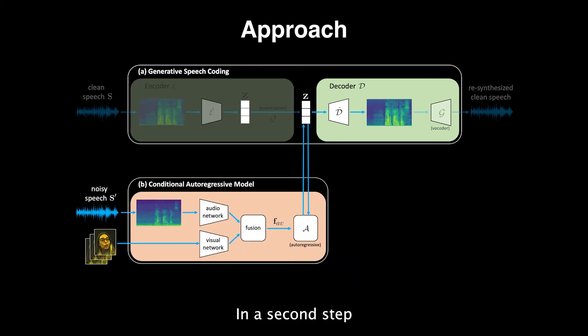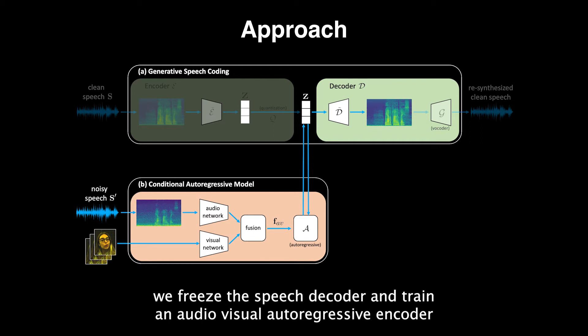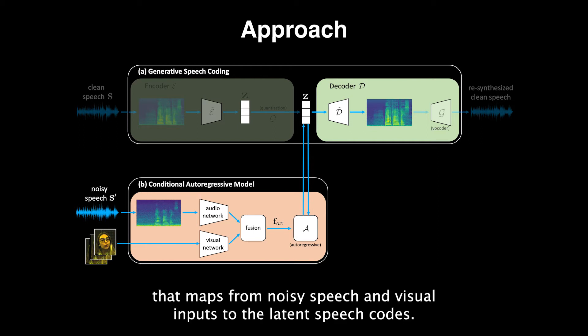In a second step, we freeze the speech decoder and train an audio-visual autoregressive encoder that maps from noisy speech and visual inputs to the latent speech codes.